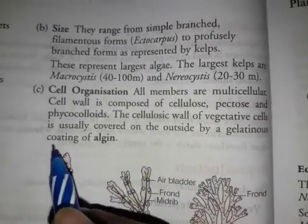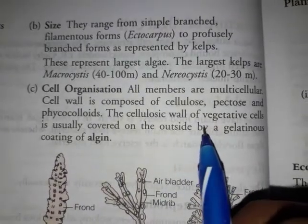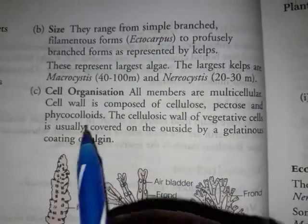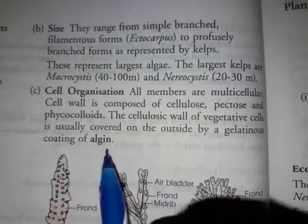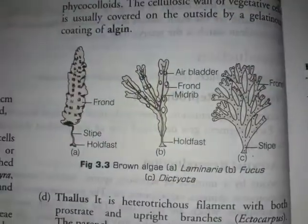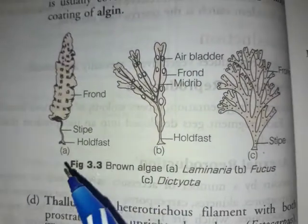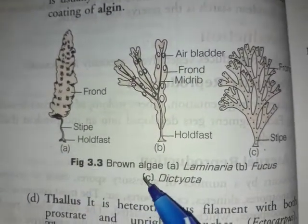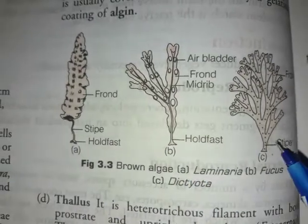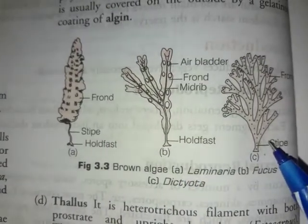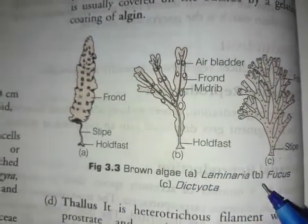The cellulose cell wall of the vegetative cell is usually covered on the outside by a gelatinous covering called algin. The representatives of brown algae are Laminaria, Fucus, and Dictyota.